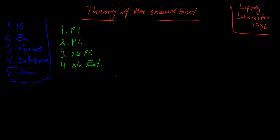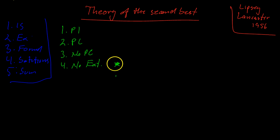Now let's say one condition is not satisfied — let's say you have an externality and you can't avoid it, there's nothing you can do about it. What should you do? Well, some people say at least we should try to have competition and all the other things as well. Maybe we can't do everything, but the best we can do is at least try to satisfy all the other three conditions.